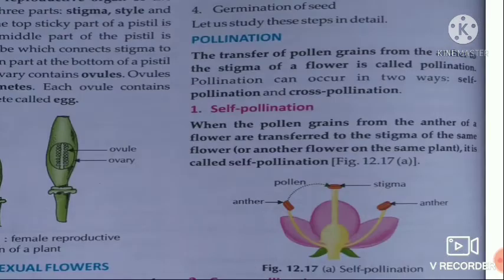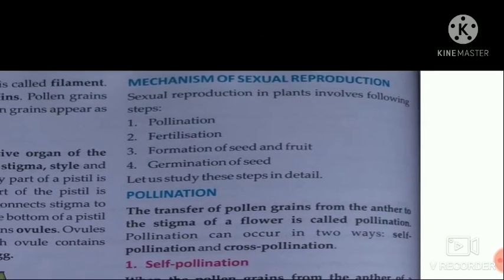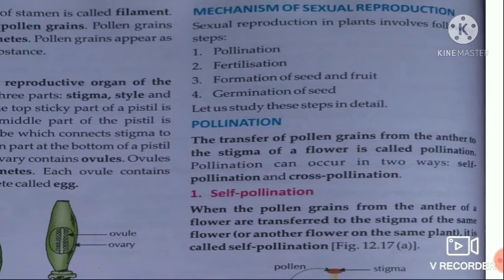Now we will read about the different mechanisms for sexual reproduction. The first is pollination. Pollination means the transfer of pollen grains from the anther to the stigma of a flower.